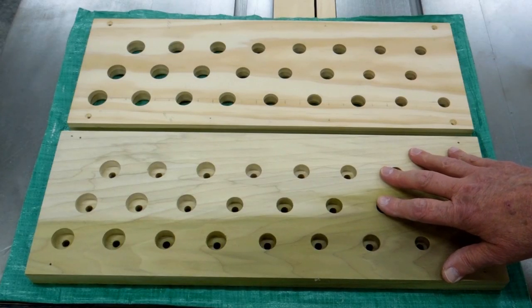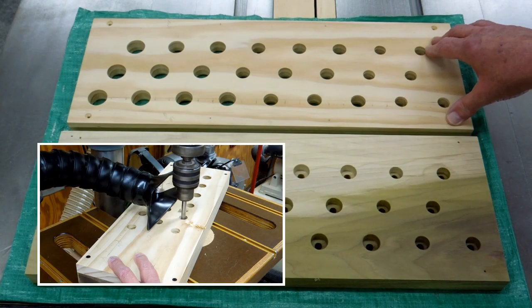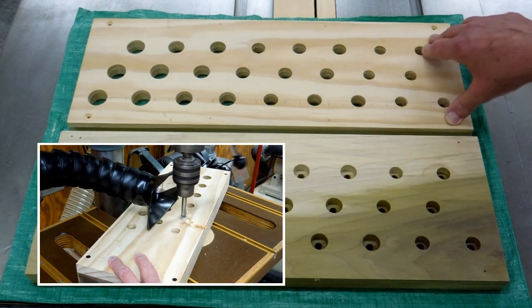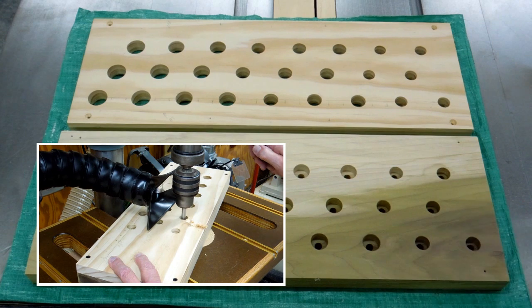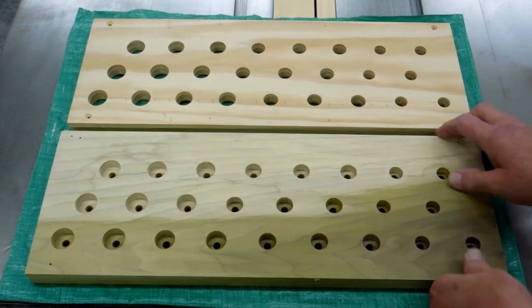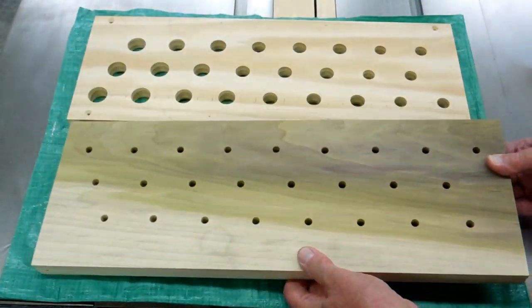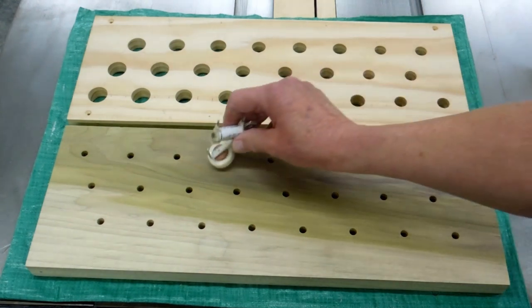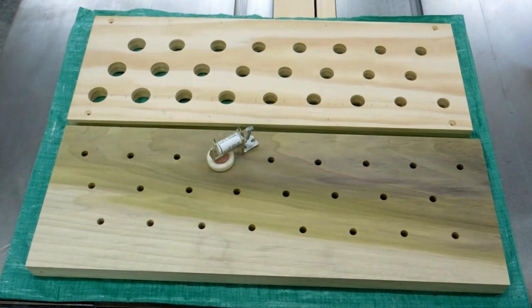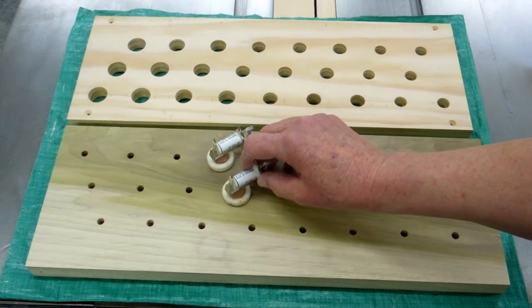These two were stacked and drilled at the same time. This is the upper support for the pipes, and this is the top of the wind chest. If you turn this over, then the pallet magnets will be in here like this.